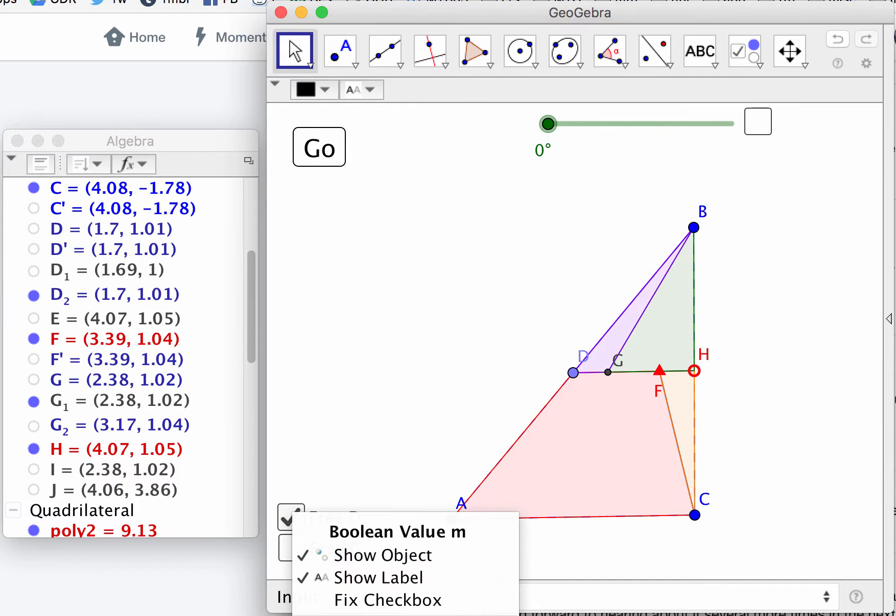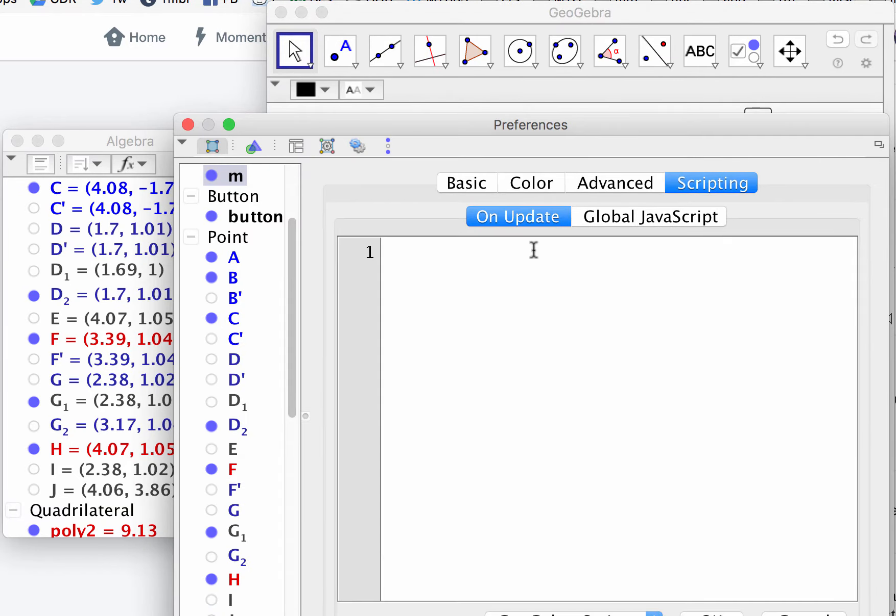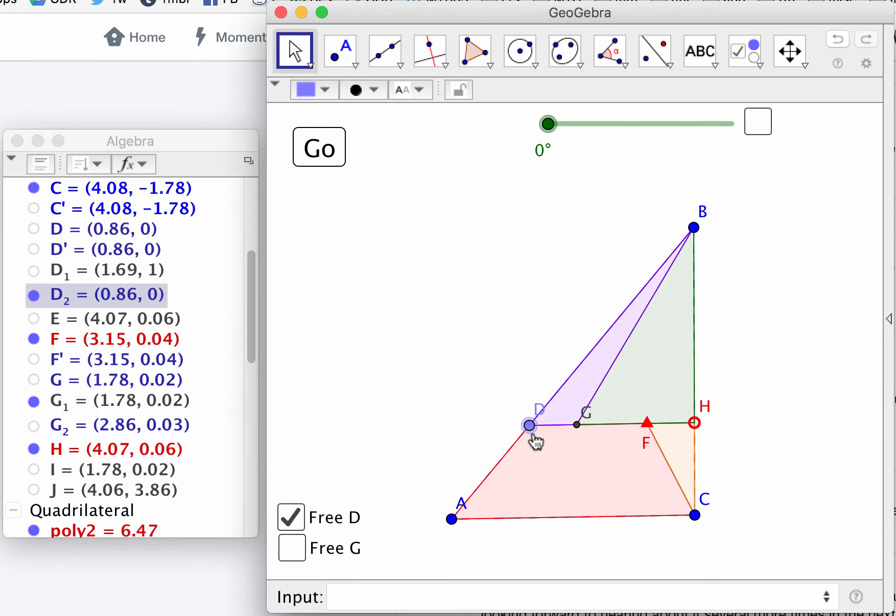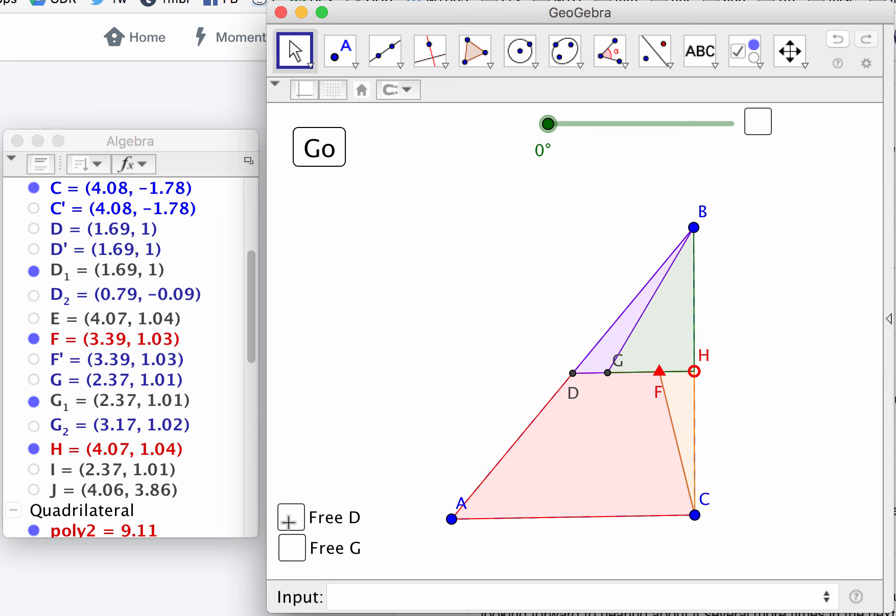So I'm thinking - this is really picky - but I wonder if when the box is clicked or unclicked, whether that should make the - I didn't like how the point jumped. So I might move the free point to wherever D is at the moment. Let's see if that works. So D is free. I move it down. I uncheck it. It's fixed. Now it's free again. I like that a little better. So I'll do that to the G as well.